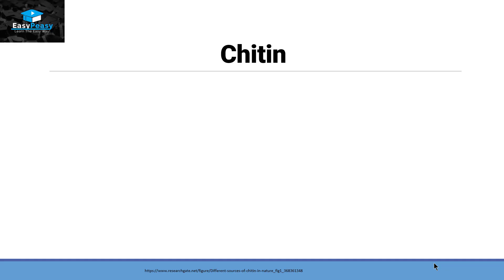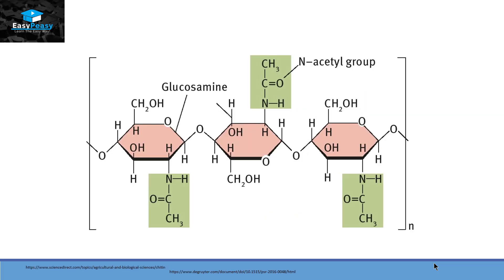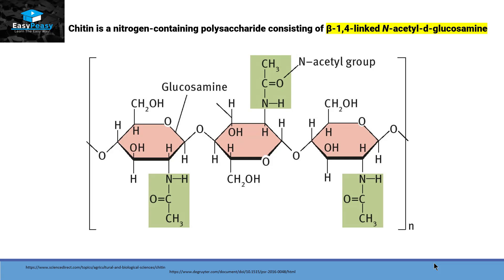Chitin is the second most abundant natural polymer and is mostly present in the exoskeleton of insects, nematodes, mollusks, crustaceans, algae and fungi. The structure of chitin is made up of beta 1,4 linked N-acetyl-D-glucosamine, where an acetyl group is present on carbon number two of each glucose unit.